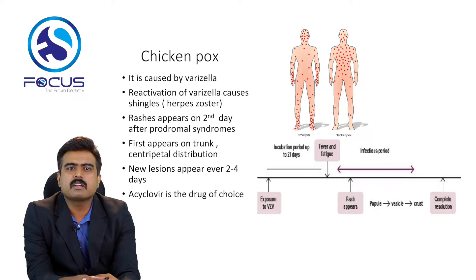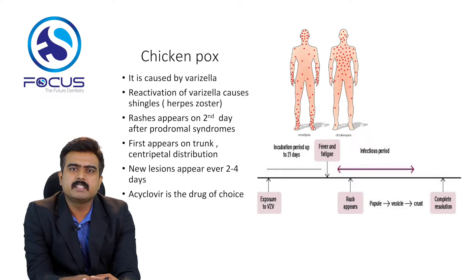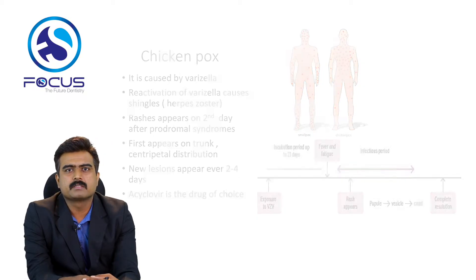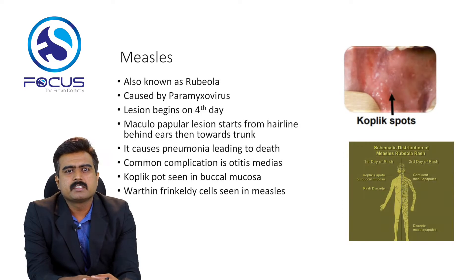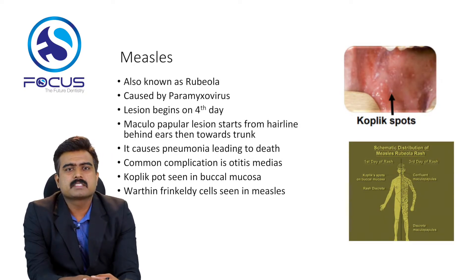In chickenpox, it is caused by varicella, and reactivation of varicella causes shingles or herpes zoster. The rashes appear on the second day after prodromal symptoms, first appear on the trunk, and it is centripetal in distribution. New lesions appear every two to four days, and the drug of choice is acyclovir.